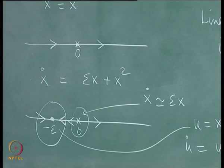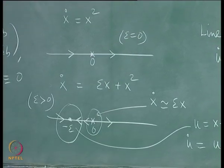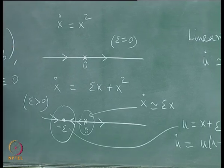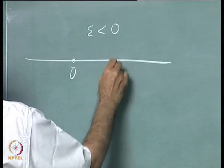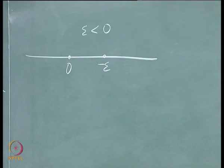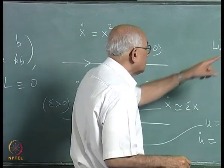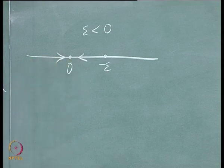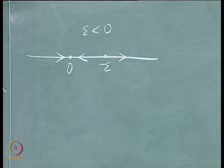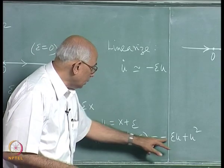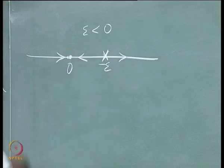So for positive epsilon there is an attractor at minus epsilon and a repeller at the origin. Their coalescence when epsilon equals zero produces the higher-order critical point. For negative epsilon the fixed points are again at zero and at minus epsilon, which now lies on the positive side. Linearization shows the origin is an attractor and the point at minus epsilon is a repeller.